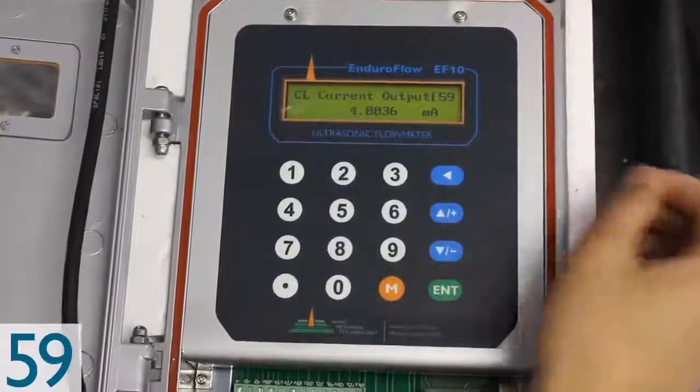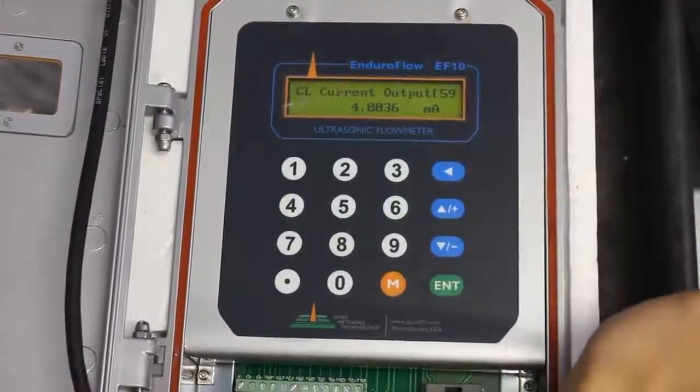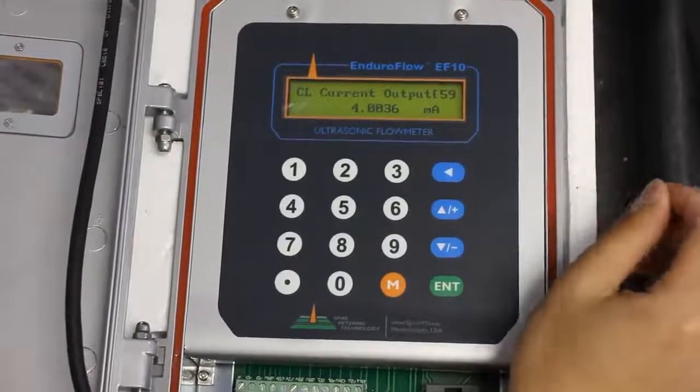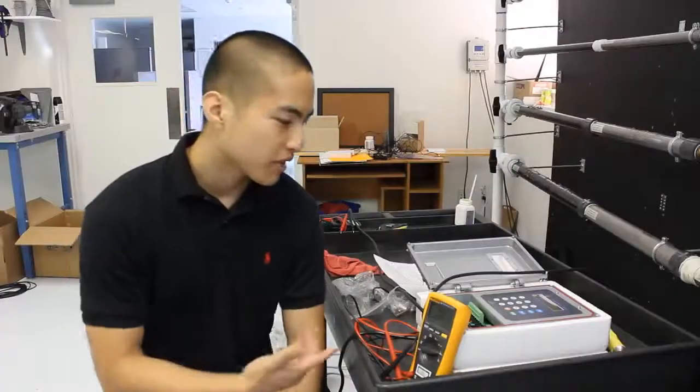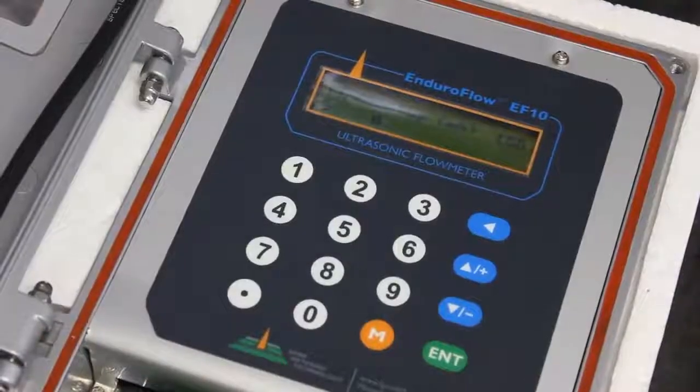So now we're going to talk about how to manually test the 4-20 milliamp and make sure it's functioning correctly. Right now I'm at menu 58. And we can scroll through to display different values of the milliamp. And what we're going to try to do is to match the values on the screen to the values that are going to be shown on this multimeter.